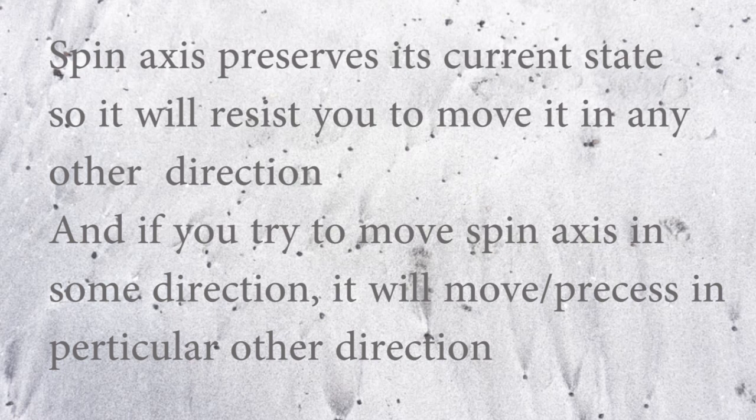The gyroscopic effect is restricting or opposing the applied force. As mentioned earlier, the gyroscope has a special phenomenon of preserving its current state: if you disturb the axis of rotation of any rotor, it will oppose it and start turning or rotating in some other direction. In which direction it will turn, we will see later in this chapter.